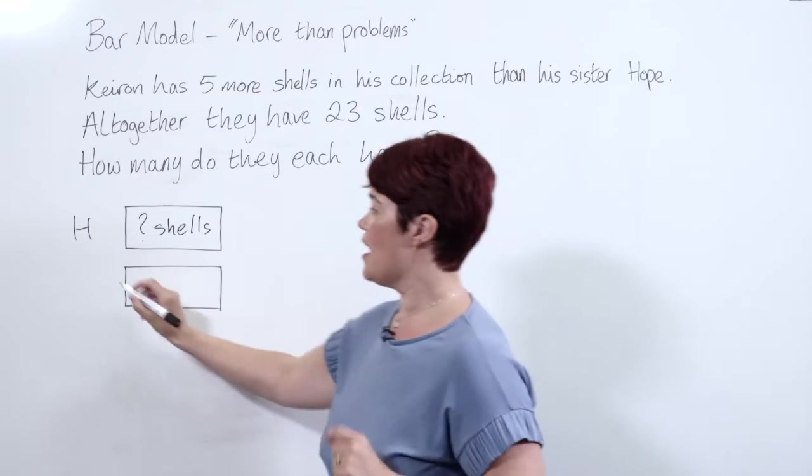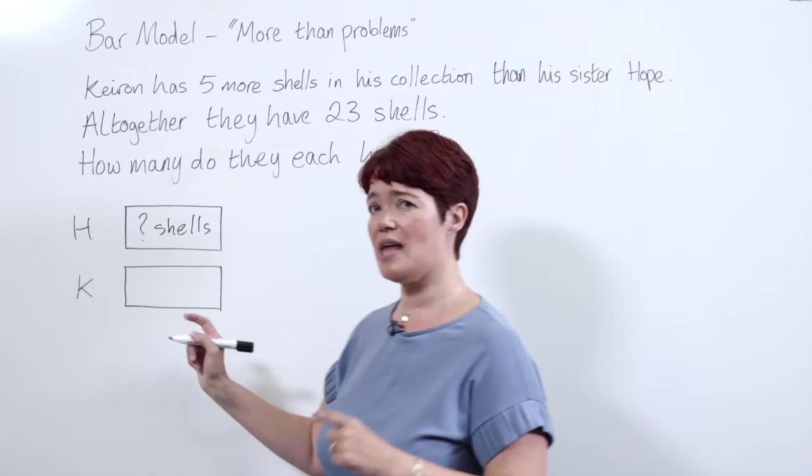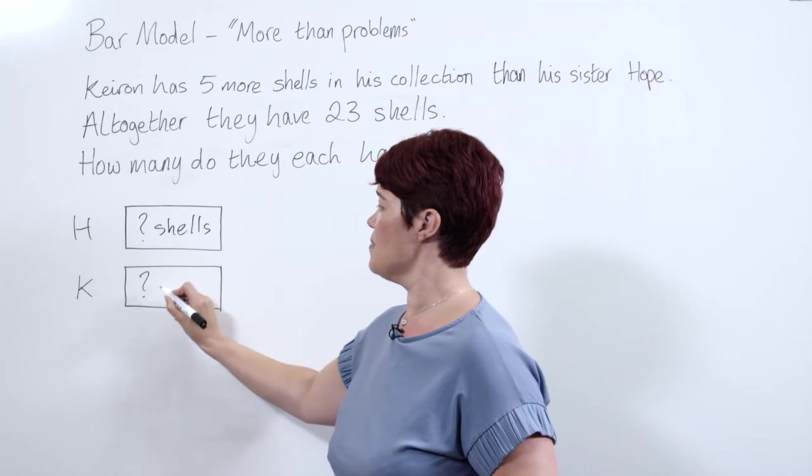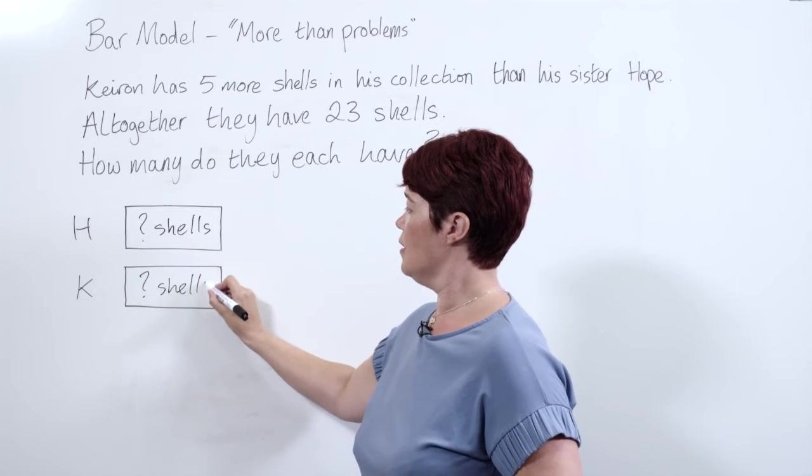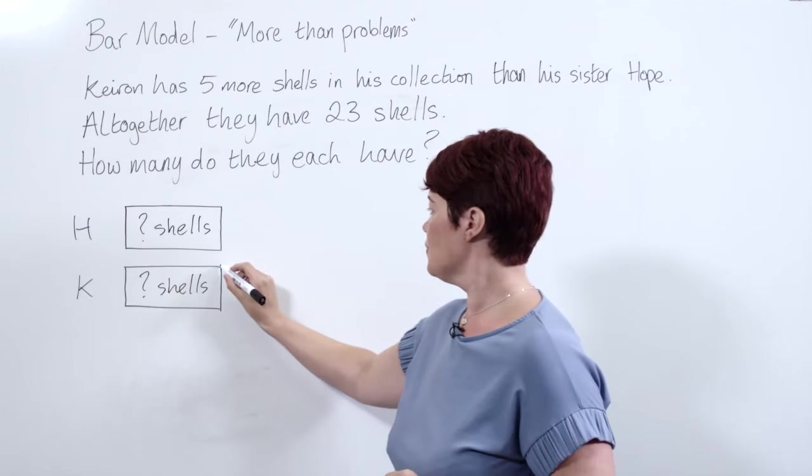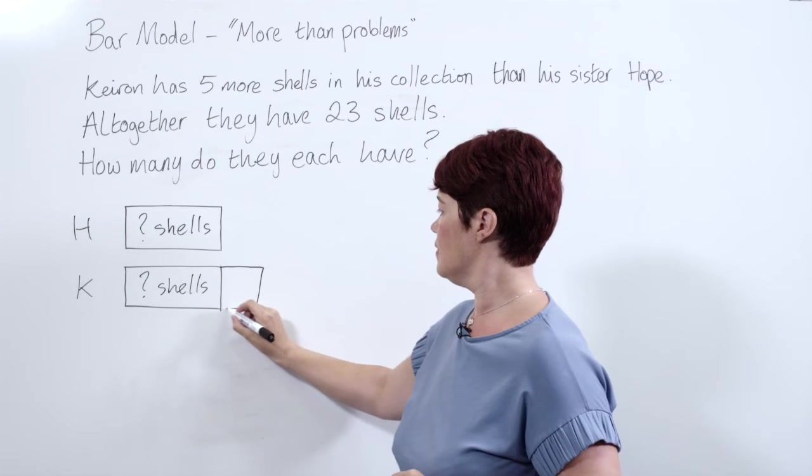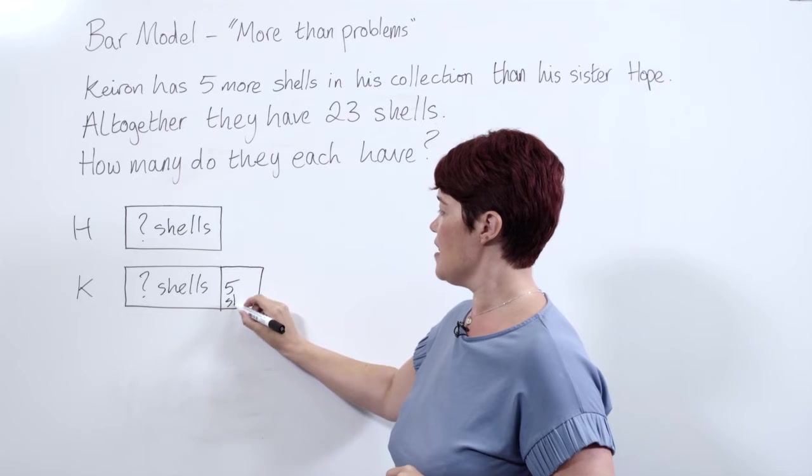Kieran has five more. Now we know Kieran must then start with the same amount as Hope, but he has five more. So we can add on to this bar and we can label this with five shells.